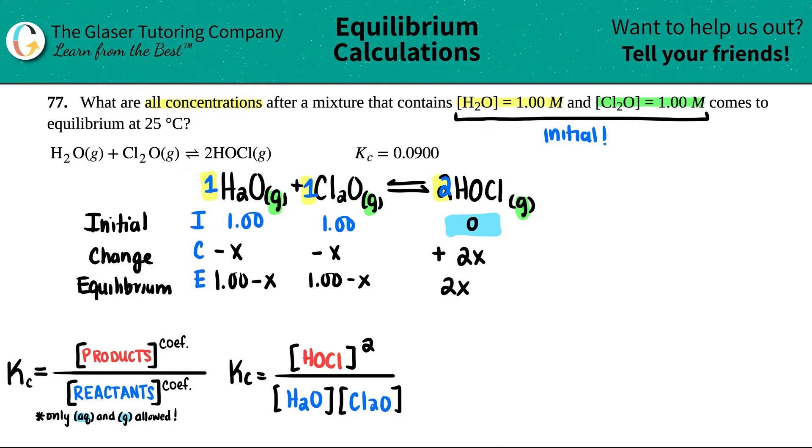Now we have some values. We know this was 2x, and both of these were 1 minus x. So 1.00 minus x for both, and the Kc value is 0.0900.